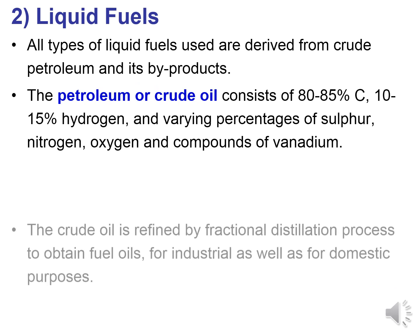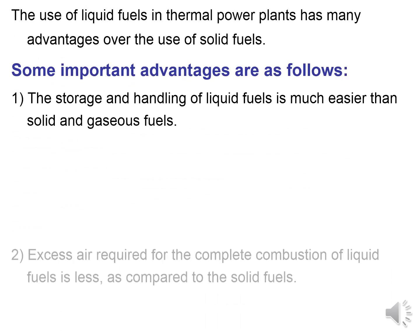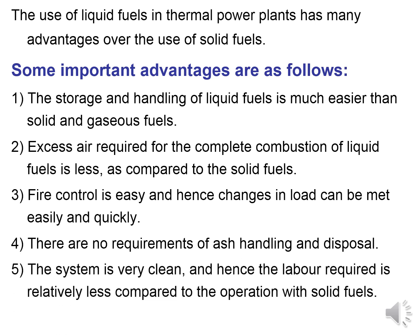Petroleum or crude oil consists of 80 to 85 percent carbon and 10 to 15 percent hydrogen, with varying percentages of sulfur, nitrogen, oxygen, and vanadium compounds. Crude oil is refined by fractional distillation to obtain fuel oils for industrial and domestic purposes. The fractions from light to heavy oil are naphtha, gasoline, kerosene, diesel, and heavy fuel oil. Advantages of liquid fuels include easy storage and handling, less excess air required for combustion, easy fire control, no ash handling requirements, and cleaner operation.